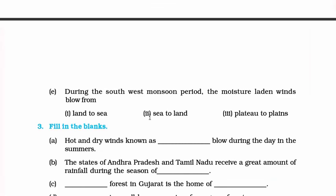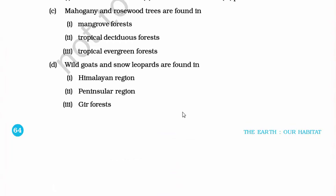During the southwest monsoon period, moisture-laden winds blow from sea to land. This is because the Indian Ocean has low pressure, and winds move from low pressure towards high pressure — that is, towards the landmass. These water molecules contained in the moisture hit the mountains of the Western Ghats and Eastern Ghats, break apart and thus monsoon rainfall occurs. This is how you combine information to build a knowledge base and give complete answers in exams.